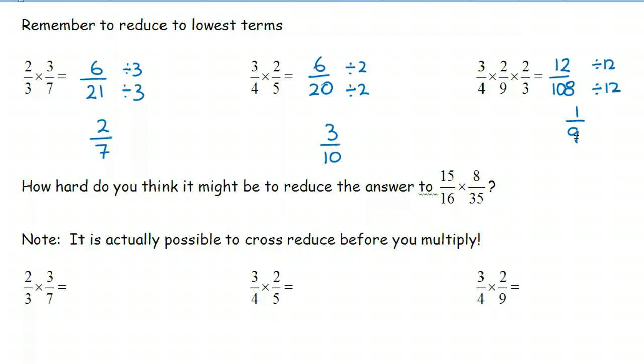Now, the problem is, for a big fraction, like fifteen over sixteen times eight over thirty-five, we're going to get an answer that's actually quite large and is very difficult to reduce to lowest terms. So there's a process that we can follow called cross-reducing.